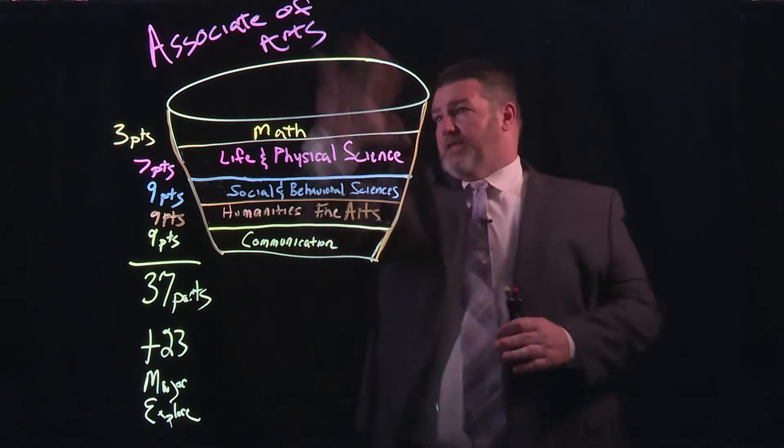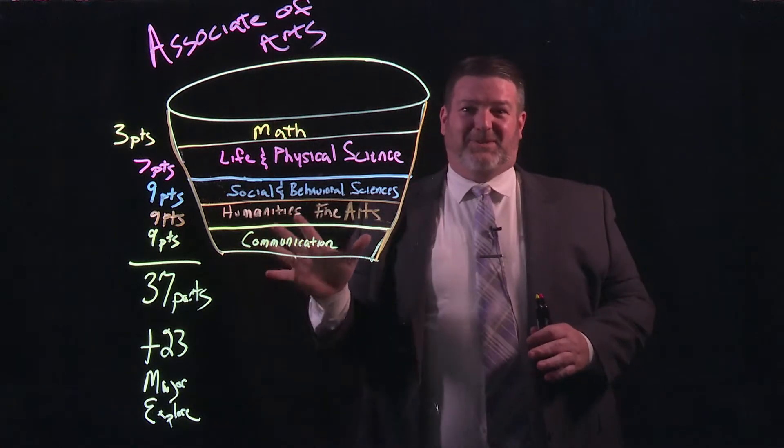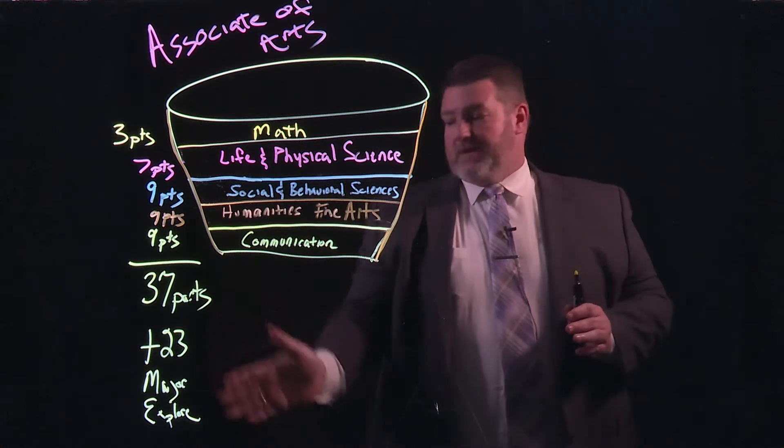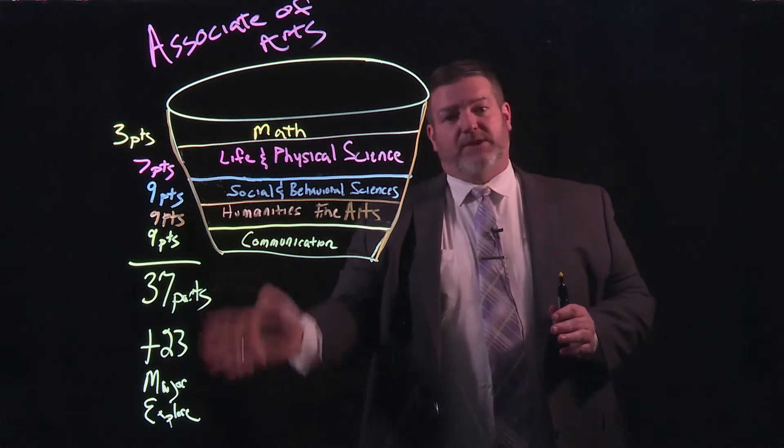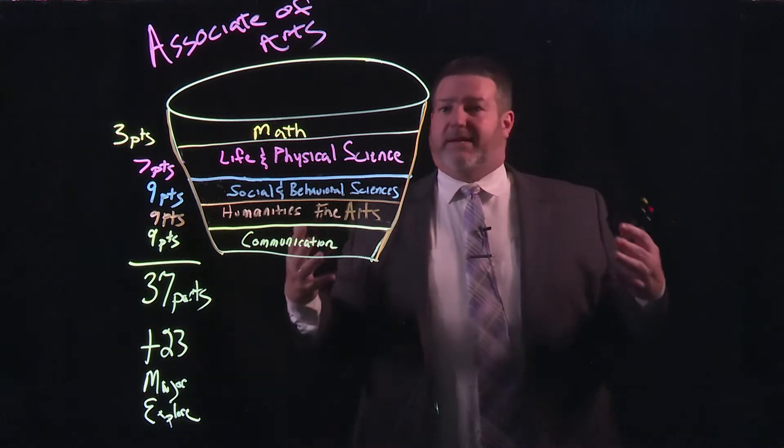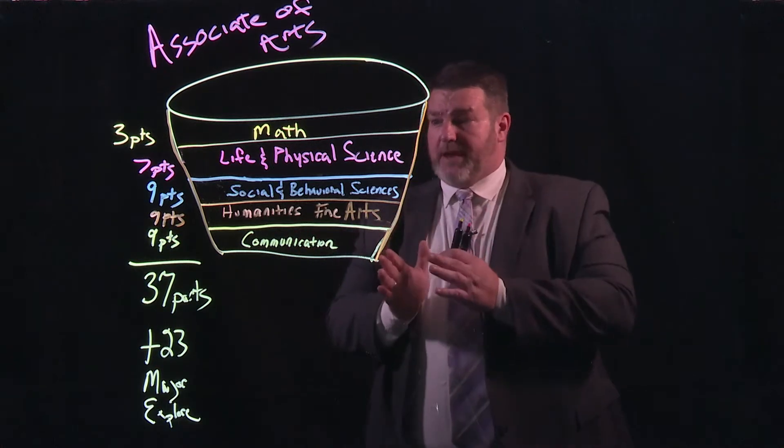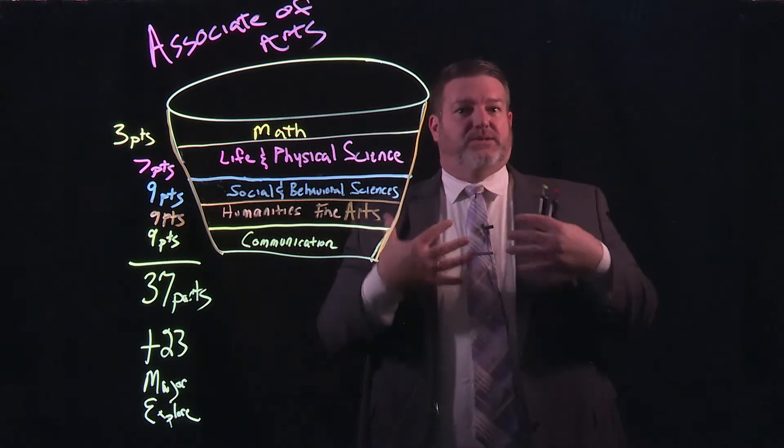All right, so that's your dry ingredients on the Associate of Arts. That's what we call the distribution requirement. But down here, they also have 60 total hours so they have 23 hours where they can explore. Or if they know their major, they can start taking courses towards their major.